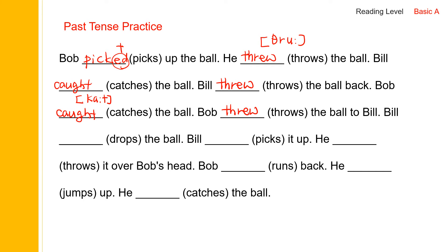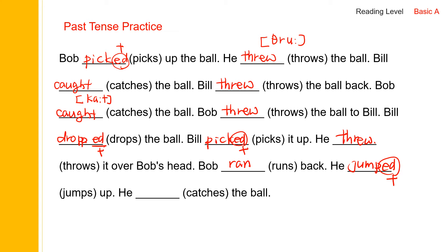And then drop — drop is a regular verb, D-R-O-P, add -ed with an extra P, so this sounds: dropped. And pick — regular verb, P-I-C-K-E-D: picked. And run: ran — run, ran. And jump: J-U-M-P, regular verb.